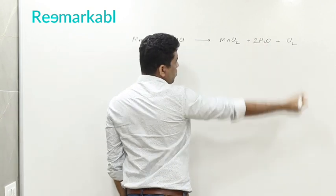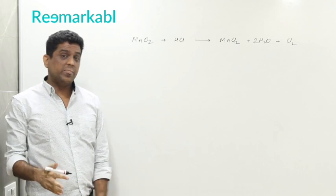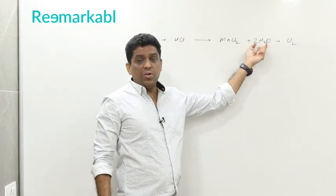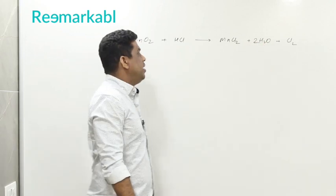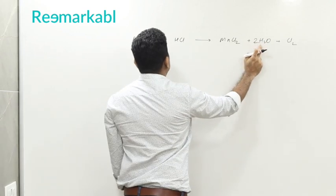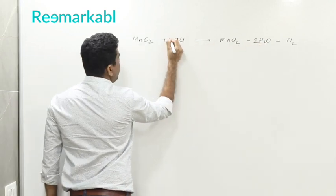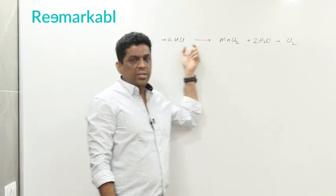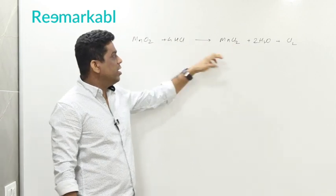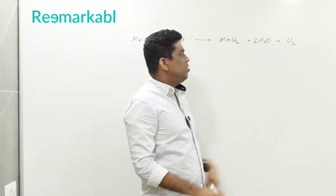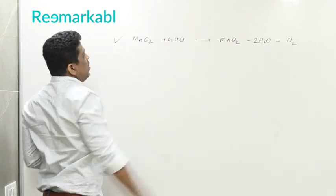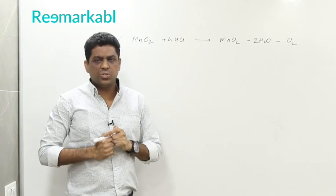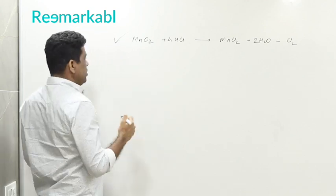How many hydrogen atoms? Four — two into two is four — so make it four here. Now count chlorine: chlorine atoms are four again — two plus two is four. So that equation is now balanced. We'll do some difficult equations also.